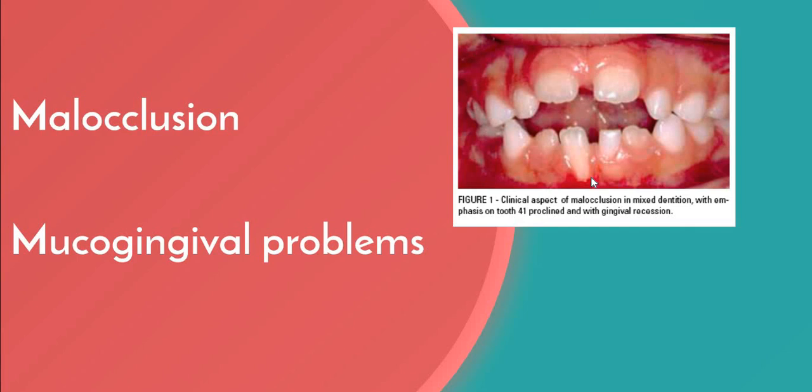Mucogingival problems can also result from fastidious habits or excessive brushing, either by the parent or the child. Because the width of the attached gingiva increases with age, any of these problems may resolve spontaneously, suggesting a cautious approach to treatment with careful monitoring instead of immediate surgical intervention. So don't jump to surgical treatment — wait until the child matures into adulthood, and if the problem persists, then bring your treatment.